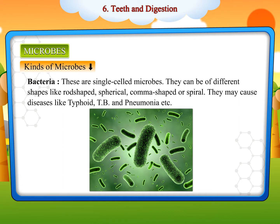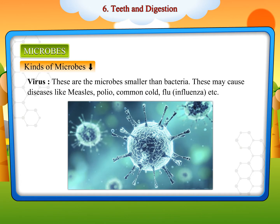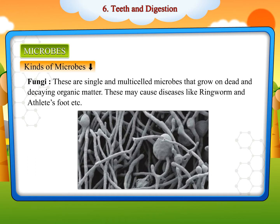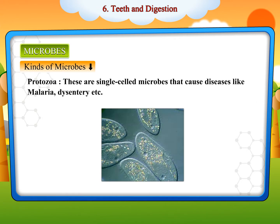Bacteria may cause diseases like typhoid, TB, and pneumonia. Viruses are microbes smaller than bacteria and may cause diseases like measles, polio, common cold, flu, and influenza. Fungi are single and multi-celled microbes that grow on dead and decaying organic matter. Protozoa are single-celled microbes that cause diseases like malaria and dysentery.